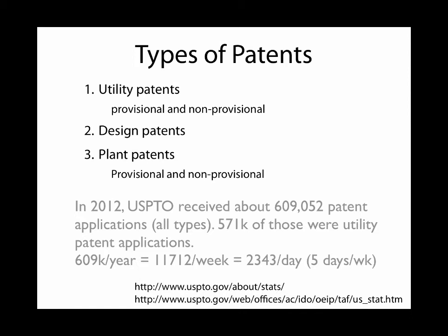Here's an interesting fact. In 2012, the United States Patent and Trademark Office received about 609,000 patent applications — that's all types: utility, design, and plant. Of those 609,000, some 571,000 were utility patents. That works out to about 11,000 per week, or roughly 2,300 patent applications received per day. In fact, there are now even more than that.